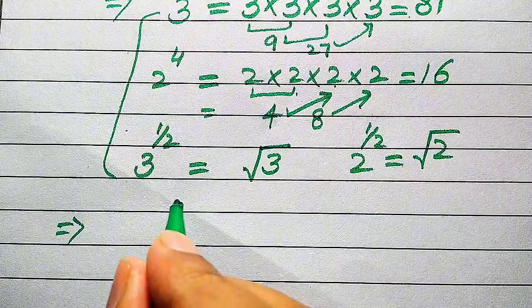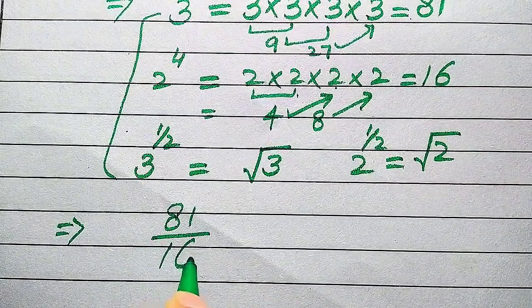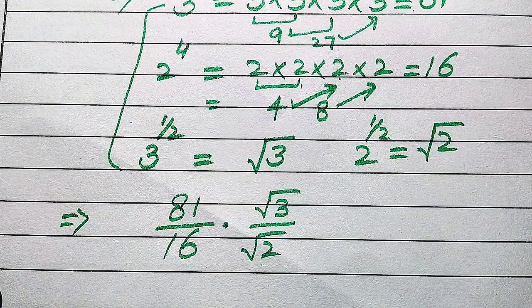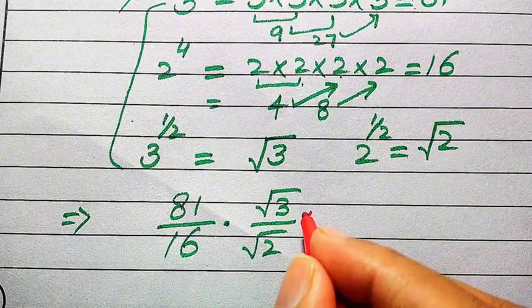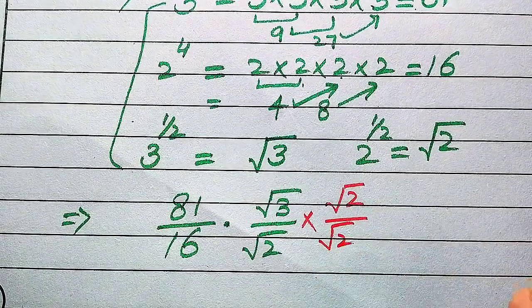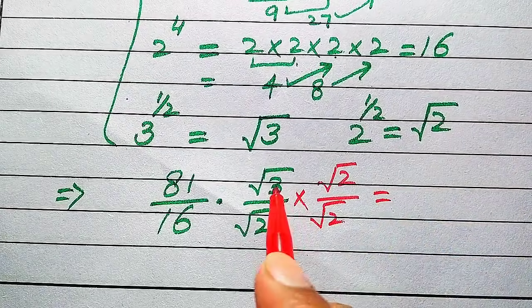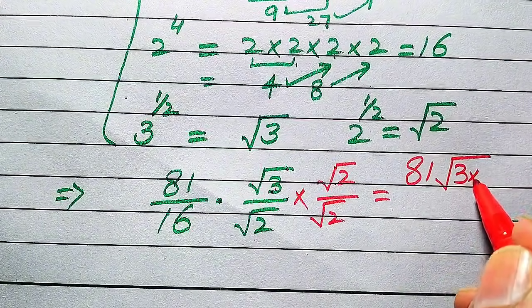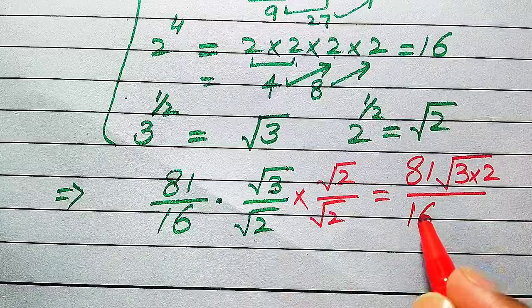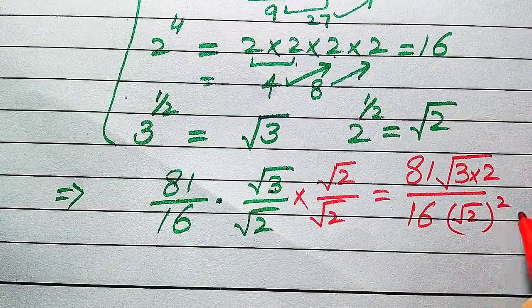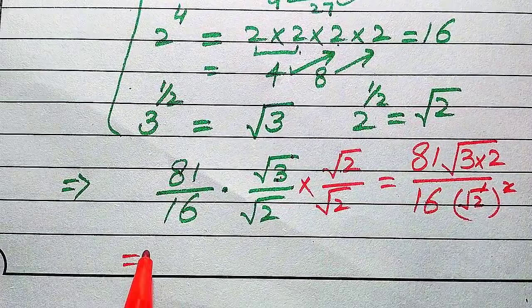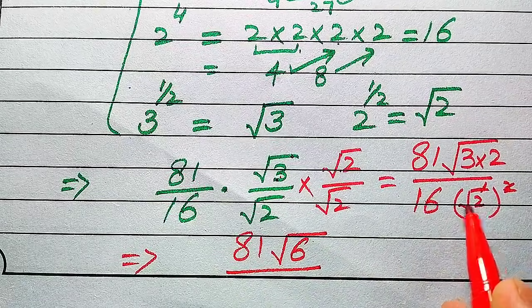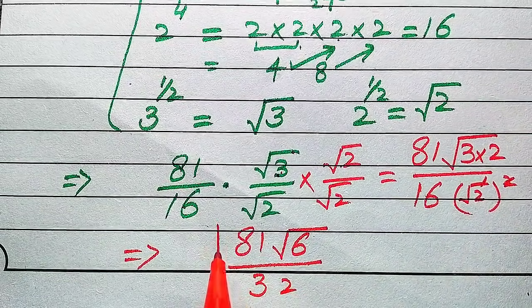Substituting all these values into the expression gives us 81 divided by 16, multiplied by square root of 3 divided by square root of 2. To write the answer in simplified form we rationalize this term by multiplying and dividing by square root of 2. Combining the square roots, we get 81 times square root of 6 divided by 16 times 2, which equals 81 times square root of 6 divided by 32. This is our final answer.